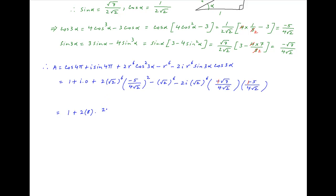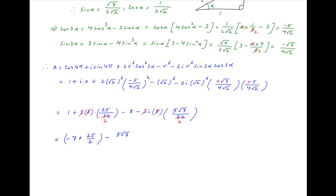This equals 8 times 25 upon 32 minus 8 minus 2i times 8 multiplied by 5 root 7 divided by 32, and this simplifies to minus 7 plus 25 upon 2 minus 5 root 7 upon 2 times i, which is equal to 11 upon 2 minus 5 root 7 upon 2 times i. This is the required answer.